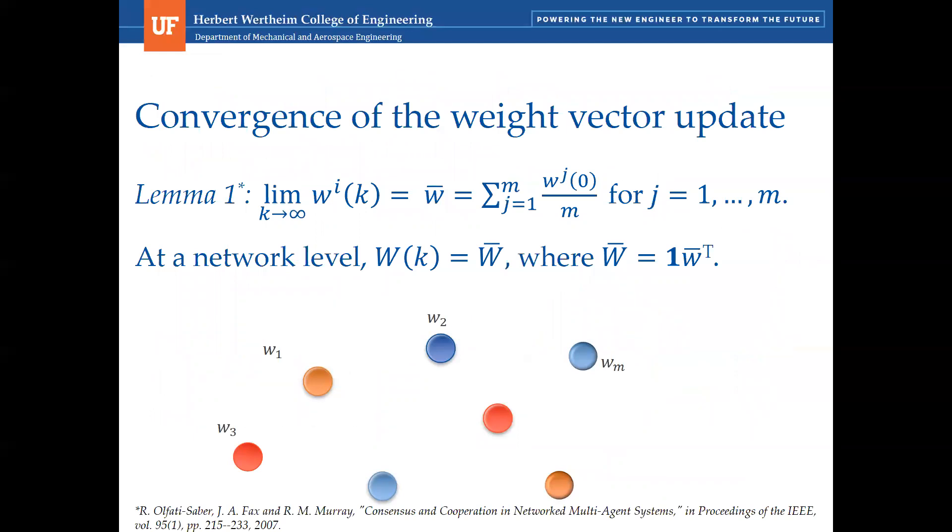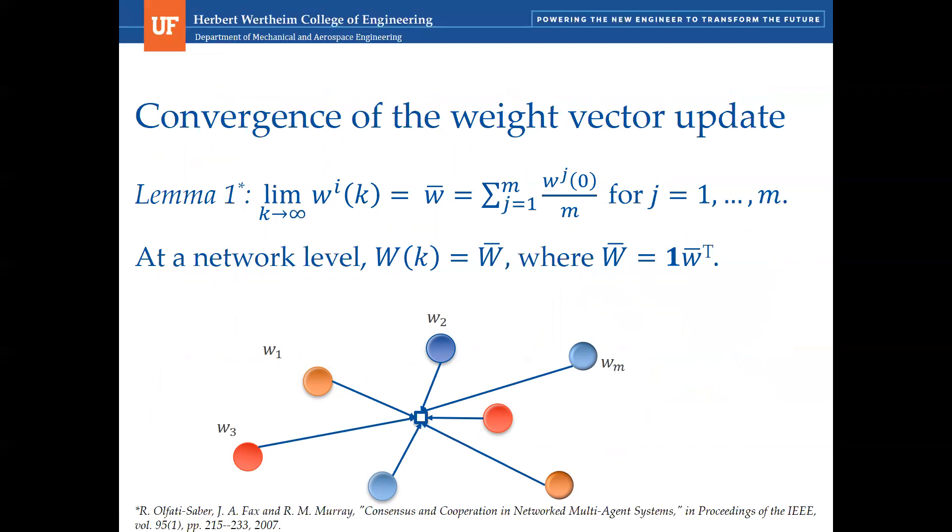Now we will look at the convergence of the algorithm. As mentioned before, agents agree on the priorities. The priorities will converge to the average of agents' initial priorities. At the network level, we will get W bar, which consists of a matrix with the same rows. The fact that the priorities are used to compute the A matrix, we can be more specific about eta A.